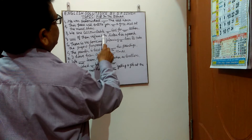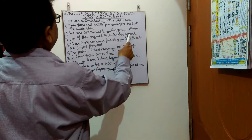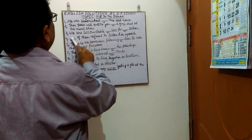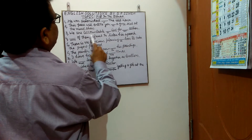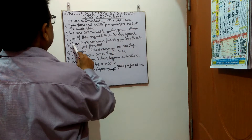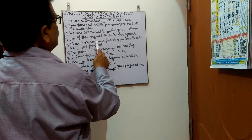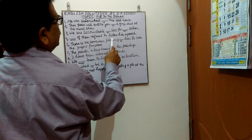Next sentence: '___ of them refuse to listen to his speech.' In the blank you have to put 'some'. The sentence will be: Some of them refuse to listen to his speech.